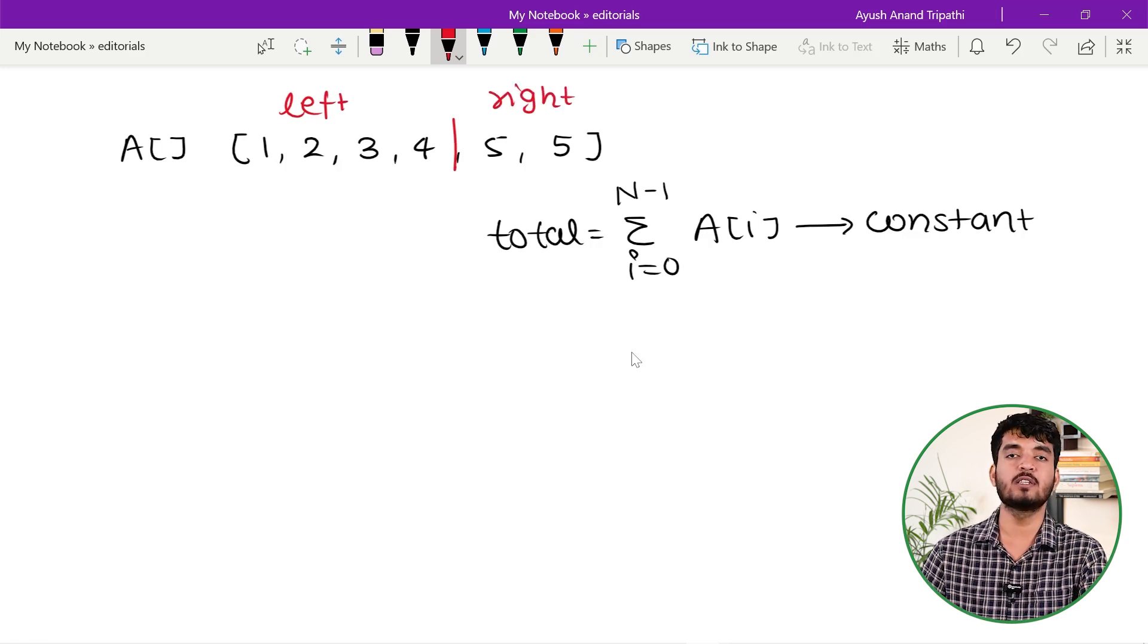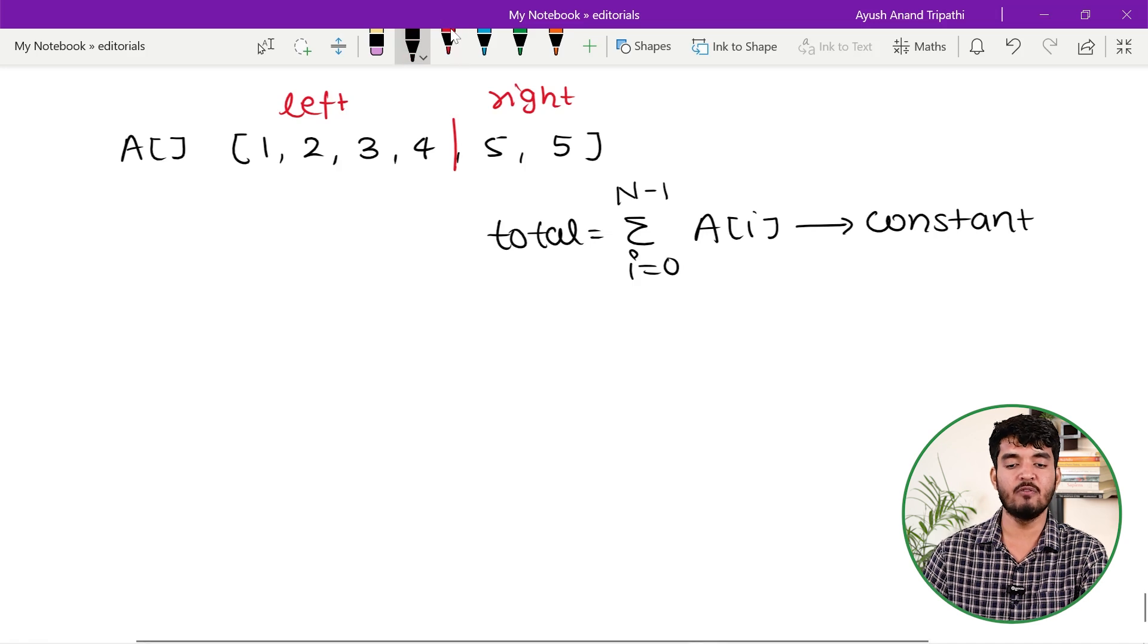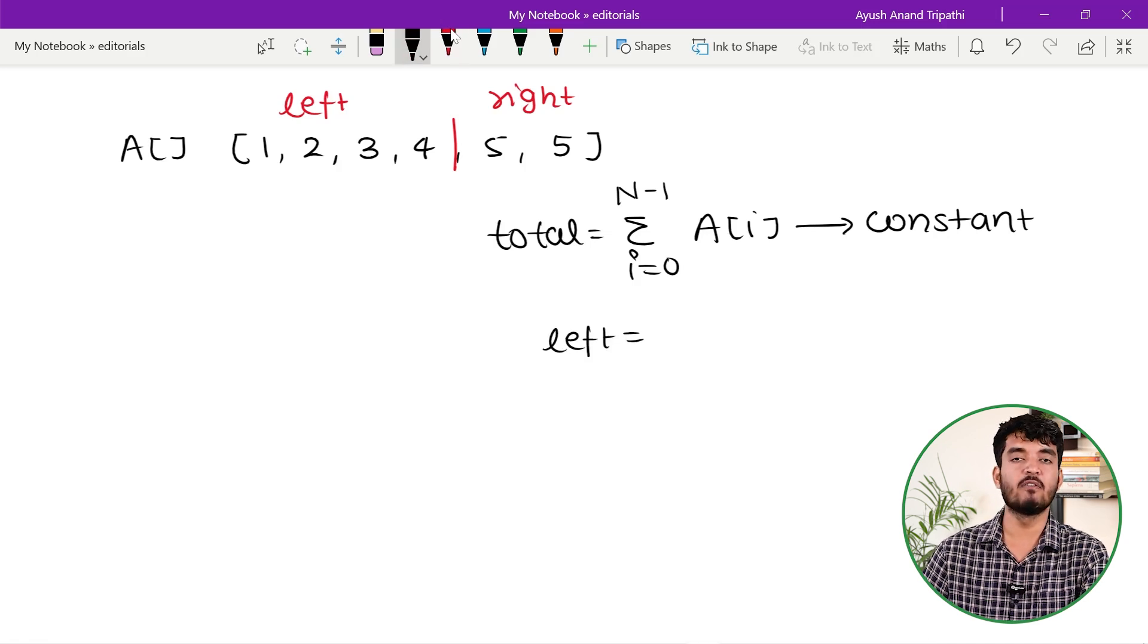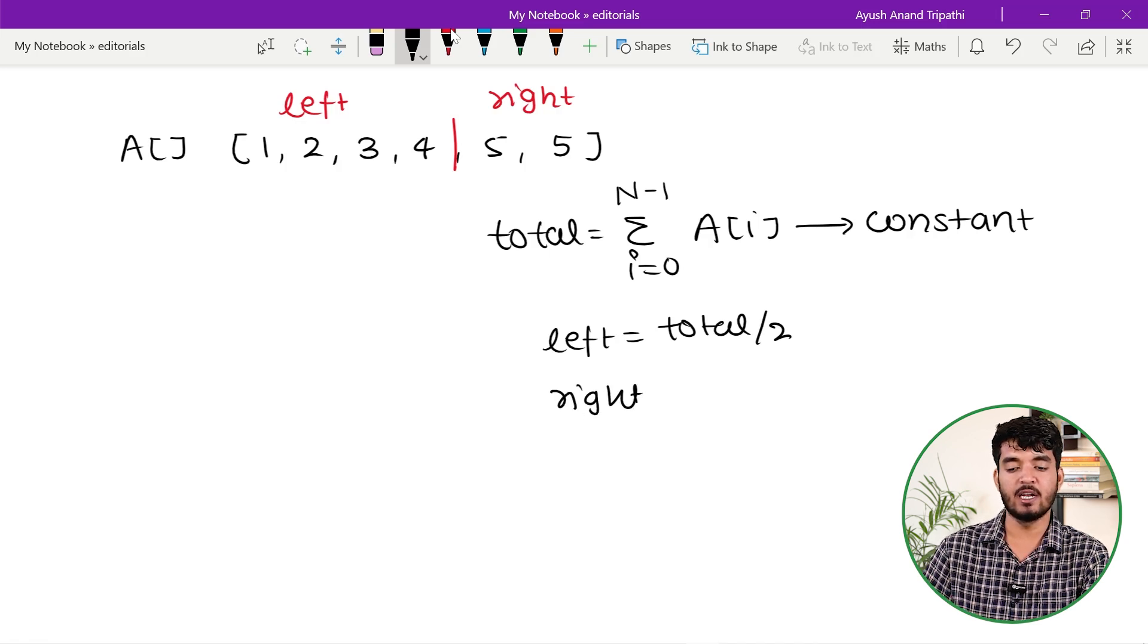If the overall sum is constant, then what would be the value of left and right? The value of left is total/2, and the value of right is also equal to total/2.